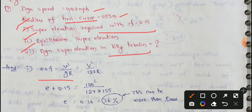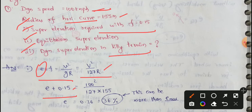For super elevation, the formula is: E plus F equals V squared by G times R. For our design speed in kilometers per hour, this simplifies to V squared by 127 into R, where R is the radius of the curve. So E plus F equals E plus 0.15, with V equals 100, giving us 100 squared divided by 127 into 155.